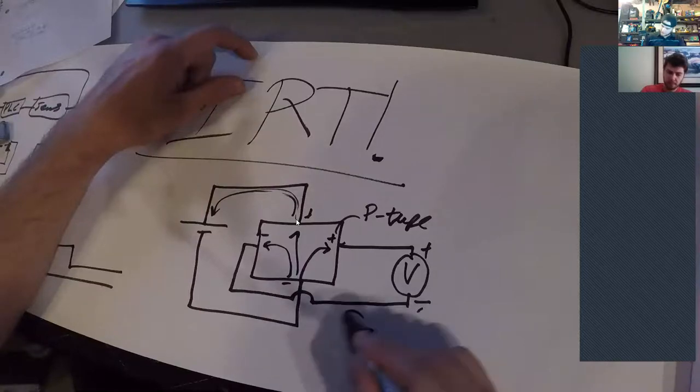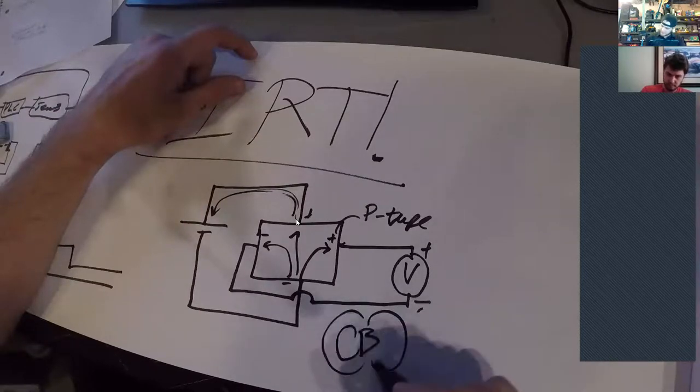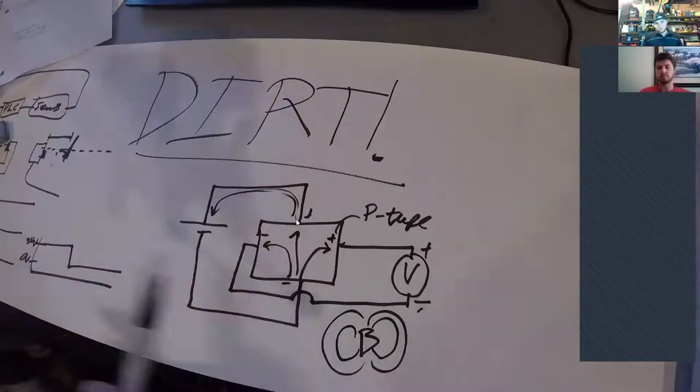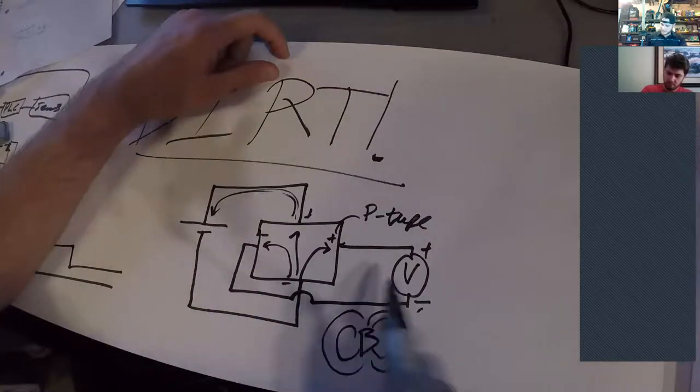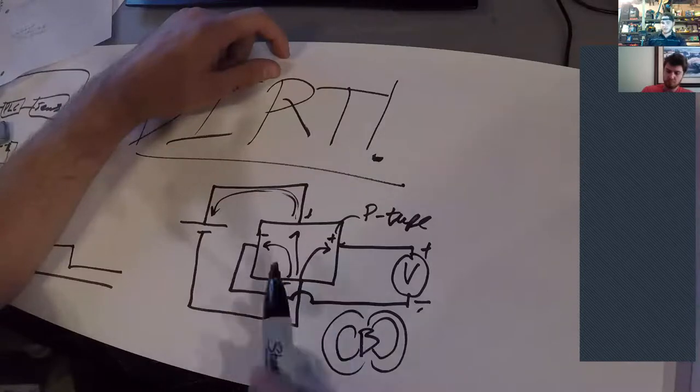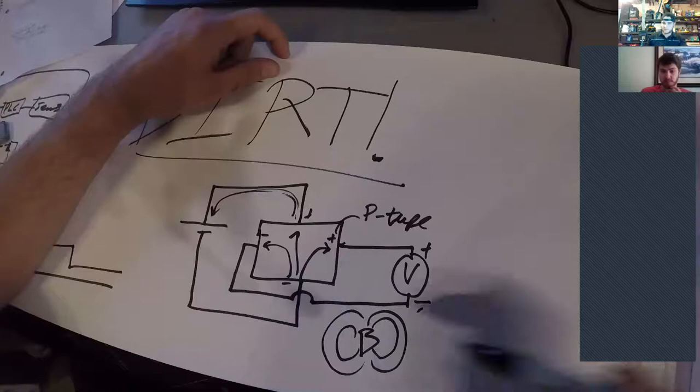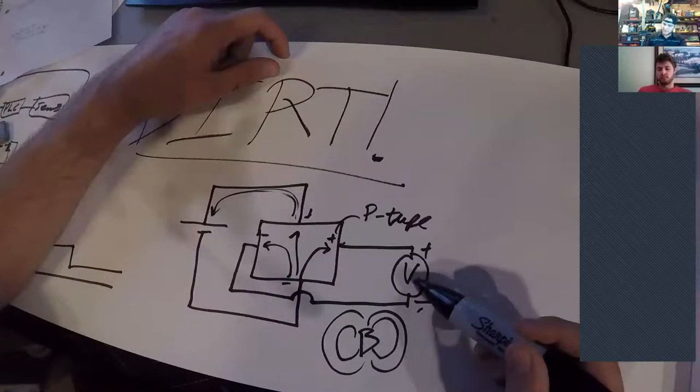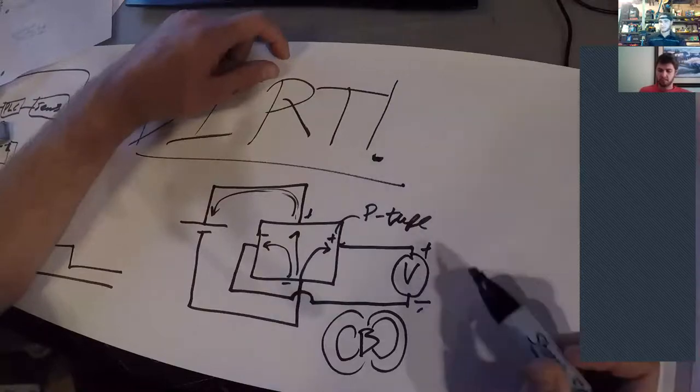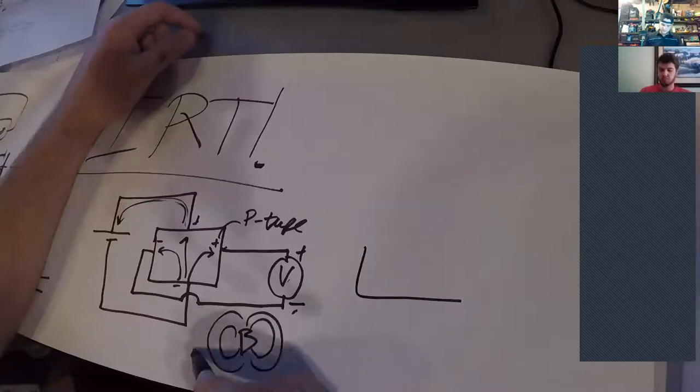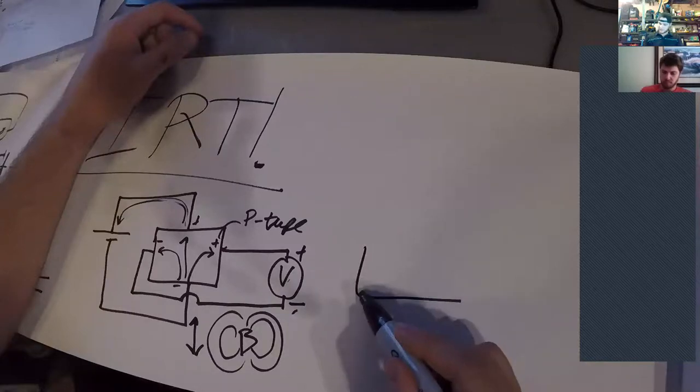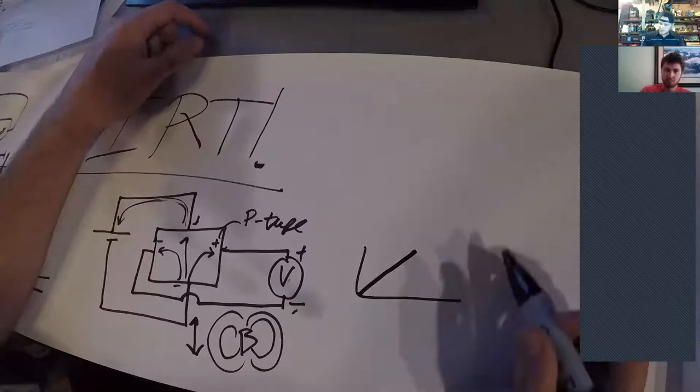So what this does is you have a current flowing through here this way. And if you introduce a magnetic field onto this semiconductor, it causes deflection of the electrons and the holes in this semiconductor.